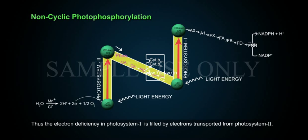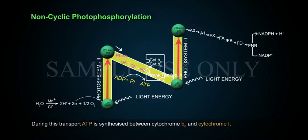Thus, the electron deficiency in photosystem 1 is filled by electrons transported from photosystem 2. During this transport, ATP is synthesized between cytochrome B6 and cytochrome F.